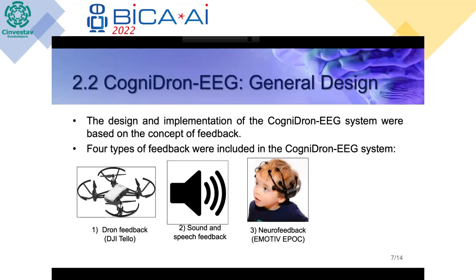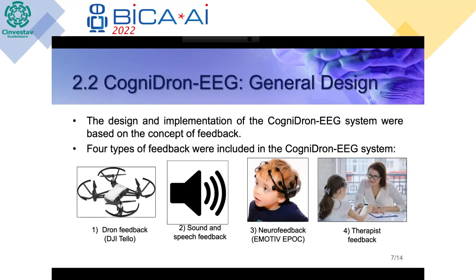Another feedback type used was neurofeedback, provided by the Emotiv Epoc headset, which is composed of 14 electrodes. Lastly, there is therapist feedback. It's important to mention that the system by itself cannot replace the therapist's intervention, because it is the therapist who provides the patient with relevant information about their session — for example, what they did well and what they could improve — so they can self-regulate their behaviors in daily life.